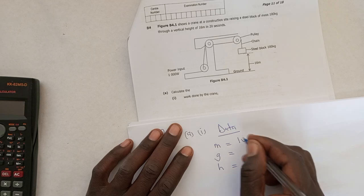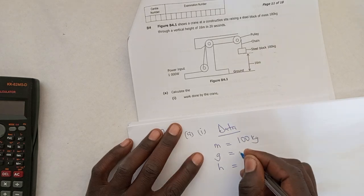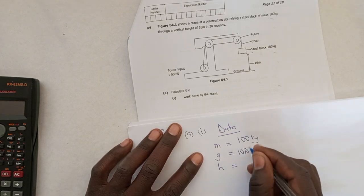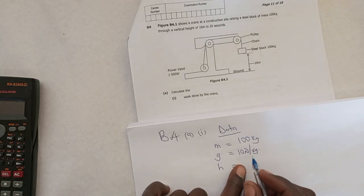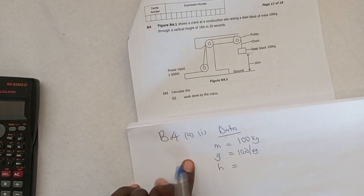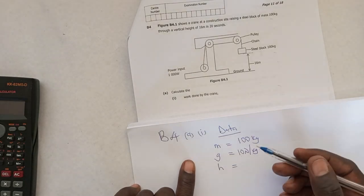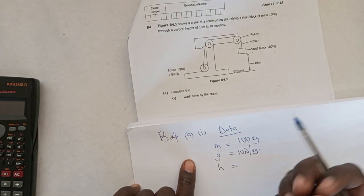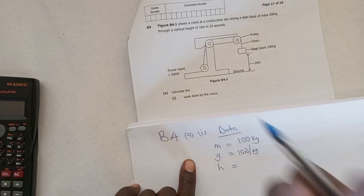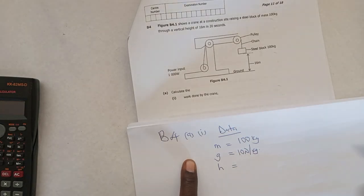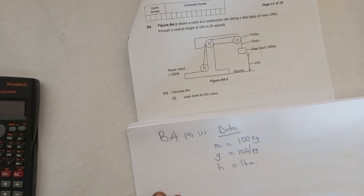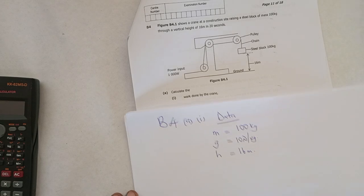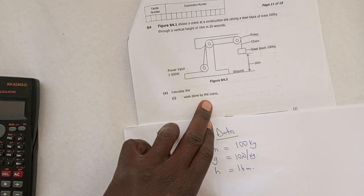What is the mass? 100 kg. G is 10 newton per kg. We're not saying 10 meters per second square because it's not moving on a horizontal straight line, but it is being lifted, so that is basically force acting on a kg. The height here is 16 meters.